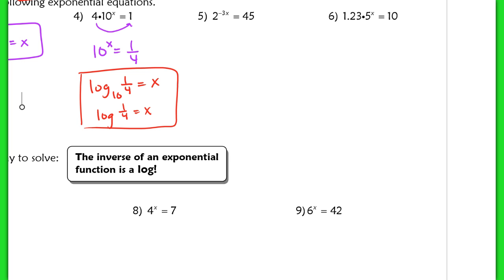In number 5, there's no number that I need to divide out to try to further isolate x. So what I'm going to do is use log form again and convert. I have log base 2 of the argument here, which is 45, equals negative 3x. My exponent here was negative 3x.